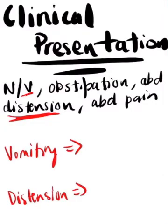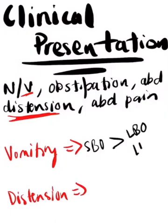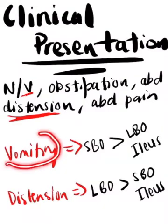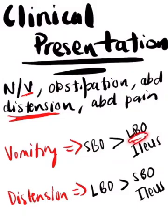Vomiting is going to be more prominent in small bowel obstruction than ileus and large bowel obstruction. Abdominal distension is going to be more prominent in large bowel obstruction than in SBO and ileus. There are also two types of vomiting a patient can have: bilious and fecalite. Patients with SBO are more likely to have bilious vomiting, and large bowel obstruction will have fecalite vomit.